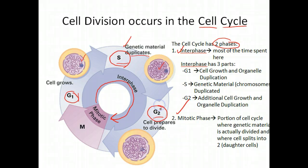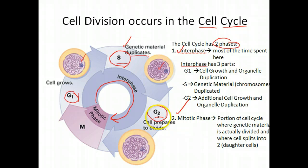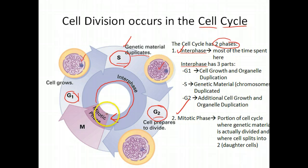The third part of interphase is G2. G2 is just another growth phase, characterized by cell growth — the cell gets bigger, there's additional organelle duplication. Essentially, the cell is preparing for the second phase of the cell cycle.